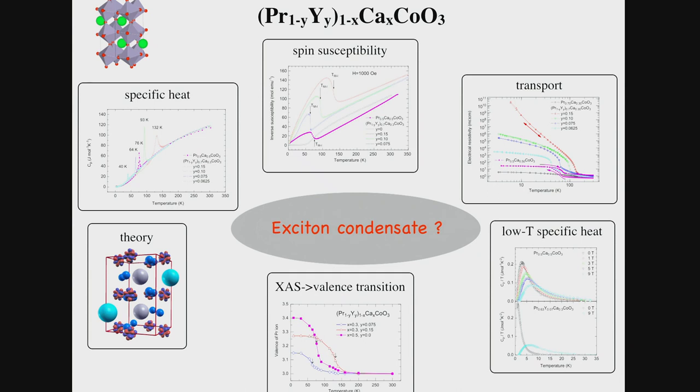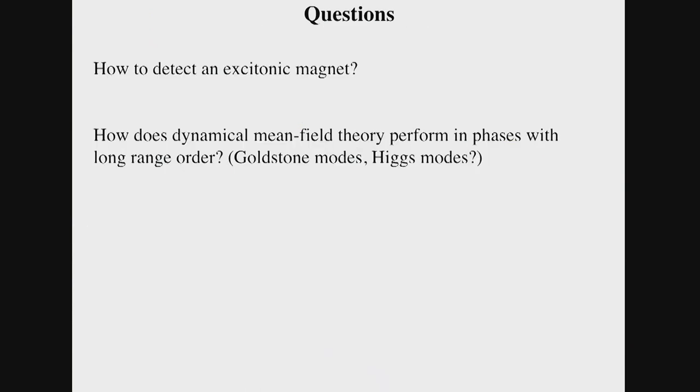One of the questions I want to ask and provide an answer to is how can we detect an excitonic magnet with today's experimental techniques? The other question is how does mean field theory perform in phases with long-range order, with spontaneously broken symmetry? Questions like do we observe Goldstone modes, what about Higgs modes, and some other fancy names that one can sell papers with.